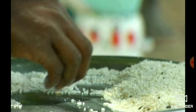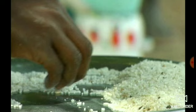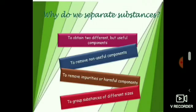We buy wheat, rice, and pulses from the market. These food grains usually contain small pieces of stones and some insects. These pieces of stone and insects are harmful to us, so we separate the small pieces of stones and insects from wheat, rice, and pulses before using them. We conclude that another reason for separating a mixture is to remove impurities or harmful components from it.